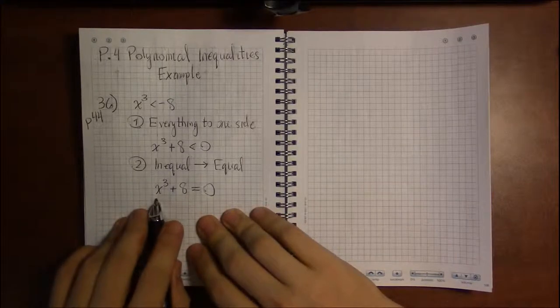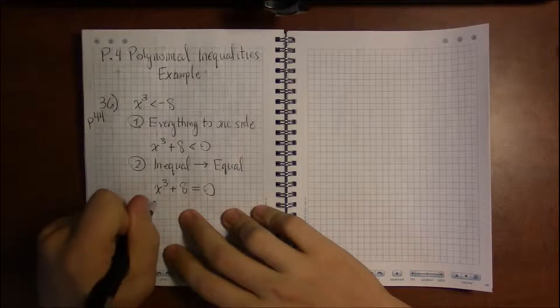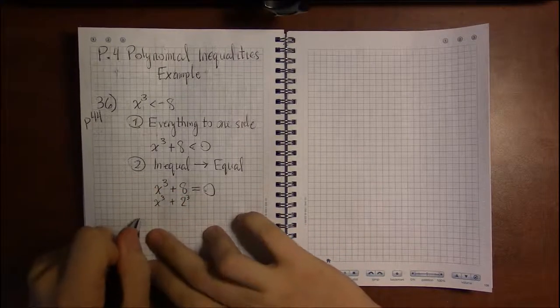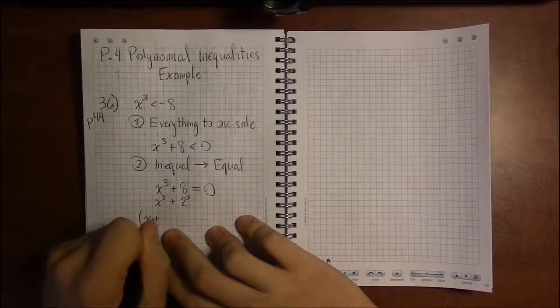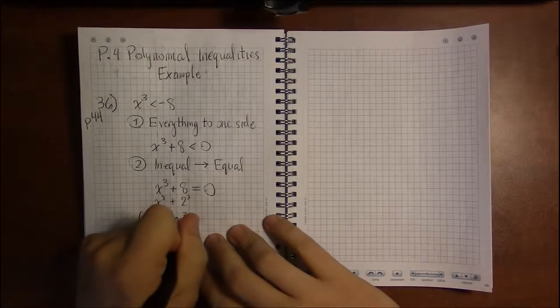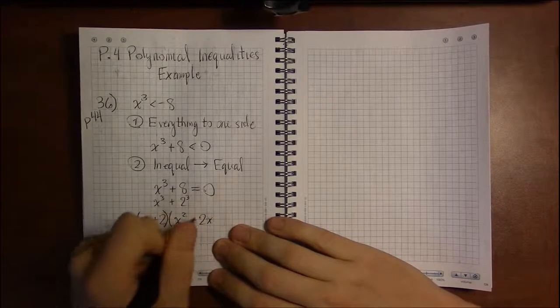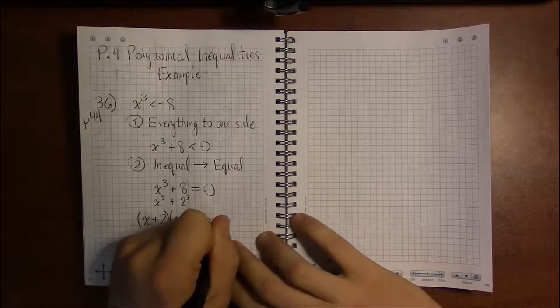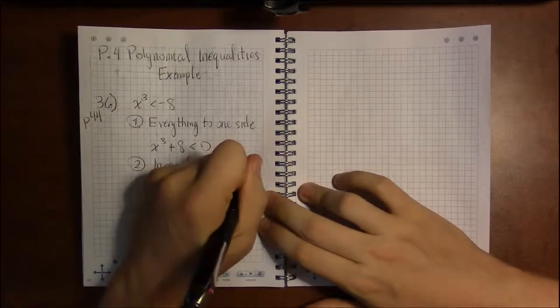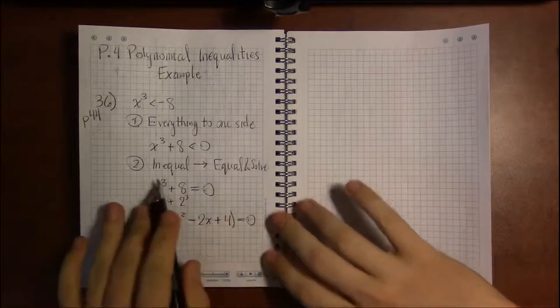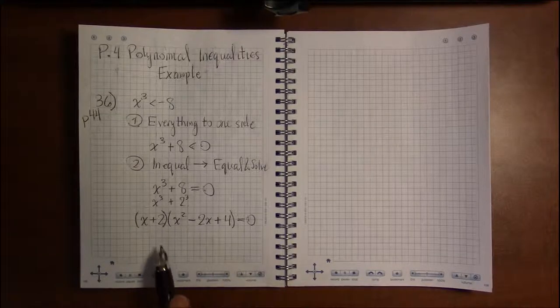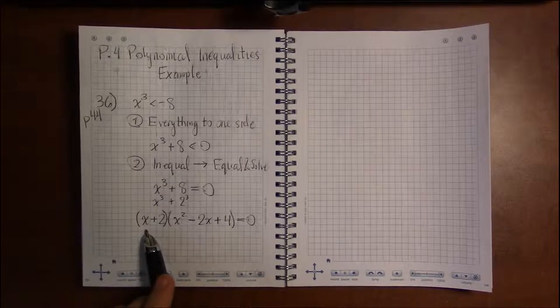This is one step where you don't have to follow me. This is known as a sum of cubes and this has a special factoring formula. This will factor as x plus 2 times x squared minus 2x plus 4. Part of this step is solving as well. I forgot to write that down. Change the inequality to an equality and solve. Somehow we magically factor this and this is as factored as it can be.